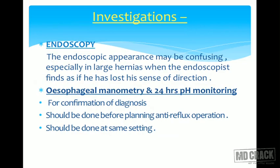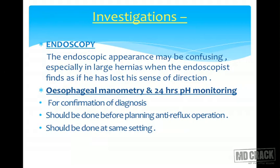Apart from barium swallow, endoscopy is used, though the endoscopic appearance can be confusing in large hernias where the endoscopist may lose sense of direction due to the altered anatomy of the herniated stomach. Esophageal manometry and 24-hour pH recording are essential for planning treatment — specifically to determine whether fundoplication should be added after hernia reduction and to quantify the degree of associated gastroesophageal reflux. These should be done simultaneously before planning any anti-reflux operation.